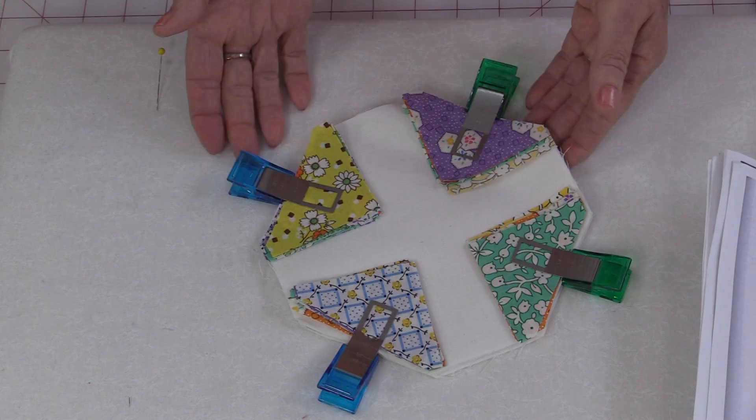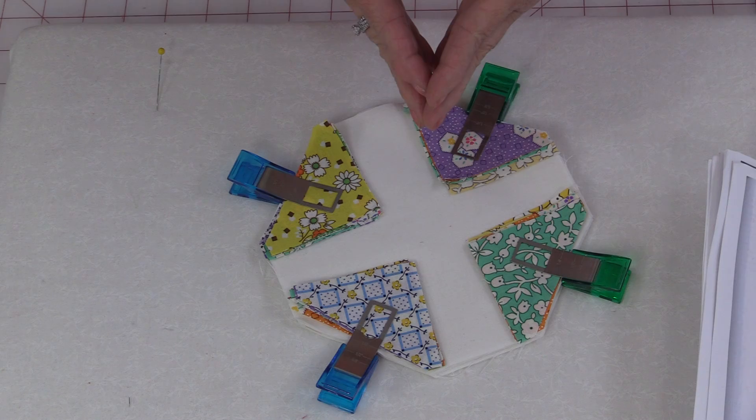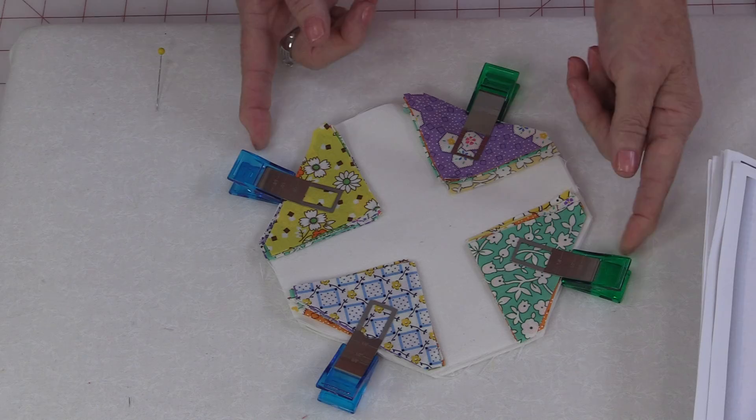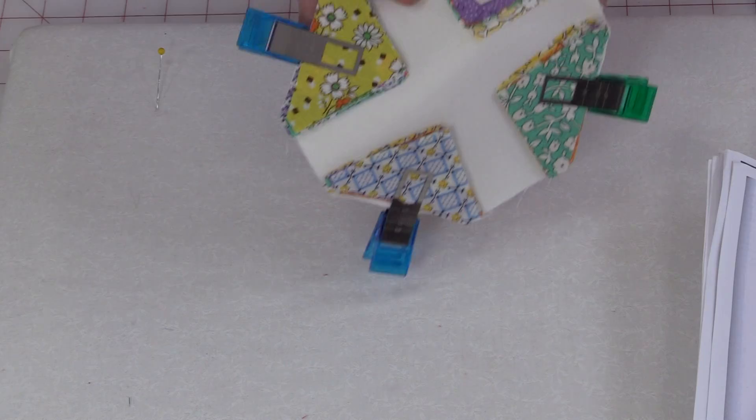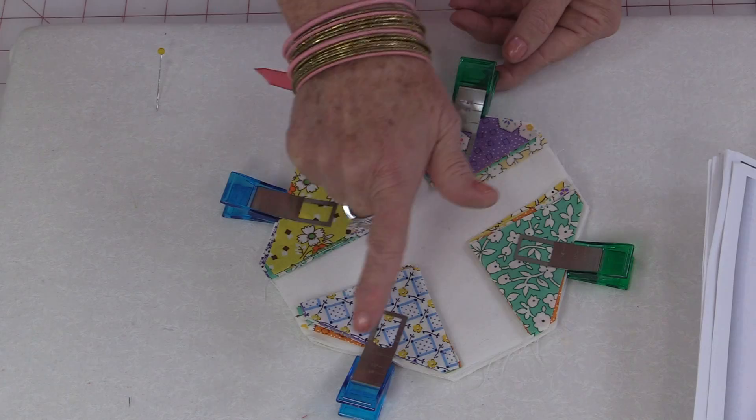When I'm traveling I also like to have my fabric pre-cut and ready to go for the machine. But I want to keep track of what I need to be sewing together so the clips work great. I know that these little points are going to be sewn right onto those corners. So now I can just pick this up and take it and I'm not going to worry about missing anything and all of my pieces are going to be together.